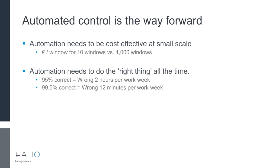The other thing is that automation needs to do the right thing pretty much all the time. If we aim for a 95% correct rate — which is a pretty high bar — we're still wrong for two hours of the work week. And occupants vividly remember the time the shading system is not doing the right thing. So we need to get closer to 99.5, maybe 99.8 or 99.9%, in the view of the occupants so that they'll be satisfied.